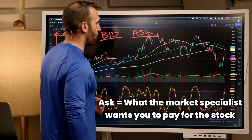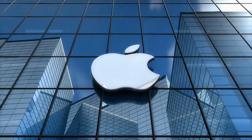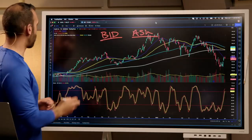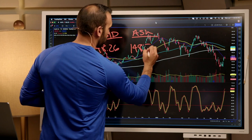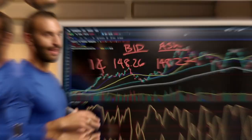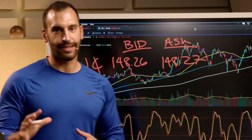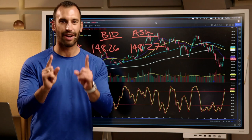Looking at Apple right now, the bid price is $148.26 — and this price changes all the time. The ask price is $148.27. So there's a one-cent difference between those two. That is consensus. You're never going to have zero because somebody wants to pay a little bit more, somebody wants to pay a little bit less. You always want one cent when you're trading stocks in this price range of about $150.